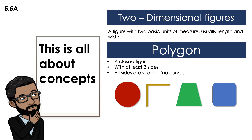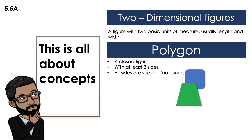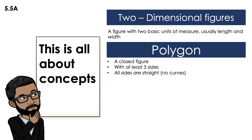The third shape: is it a closed figure? Yes. Does it have at least three sides? Yes, it has four. And all sides are straight? Yes, all sides are straight. Now the last one: is it a closed figure? Yes, with at least three sides — it has four. However, the corners are not defined; it has curves. So the only shape that can be a polygon out of these four is the trapezoid.